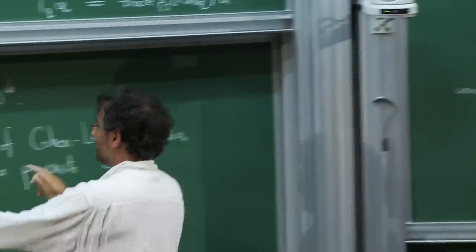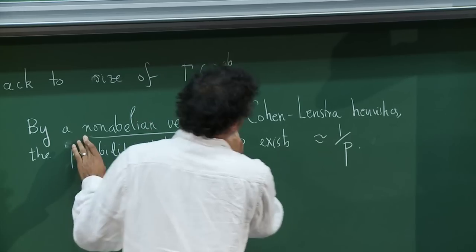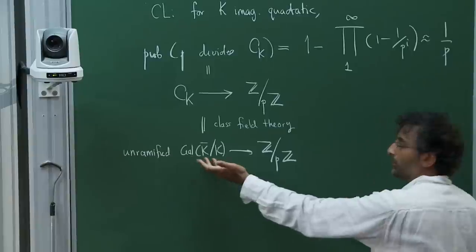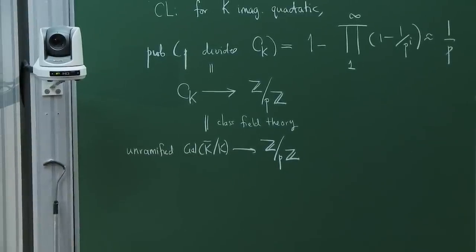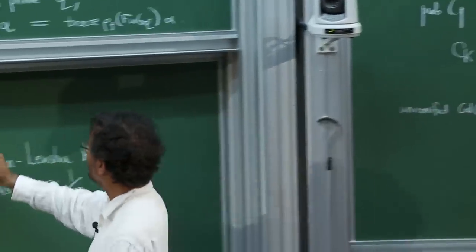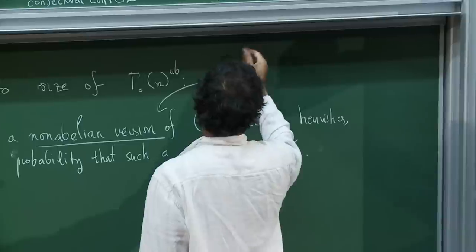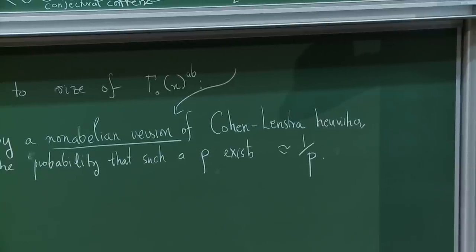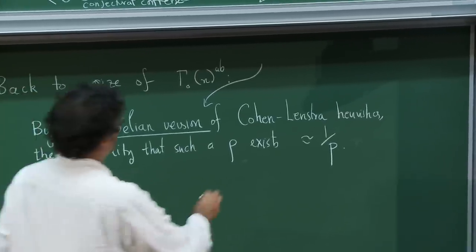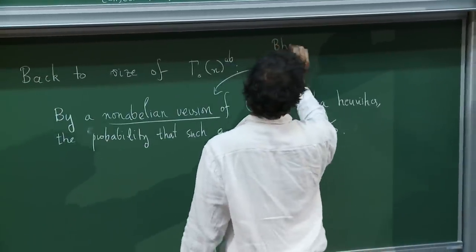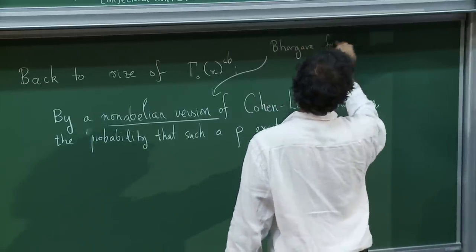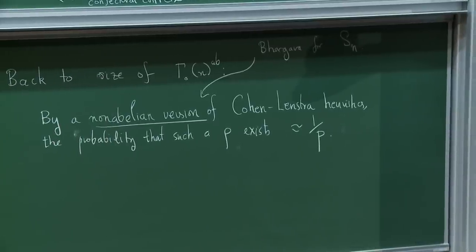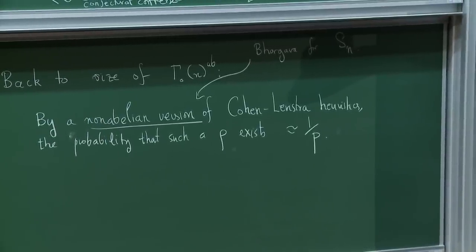So the Cohen-Lenstra heuristics tell you how likely it is to have an abelian extension of a number field, and the answer is supposedly 1 over p. When I say a non-abelian version of these heuristics, I mean something that describes the chance of having a homomorphism from the Galois group to a non-abelian group. This exists largely due to work of Bhargava, who formulated this for the symmetric group. If you take what he did and apply it recklessly, you come to this claim.